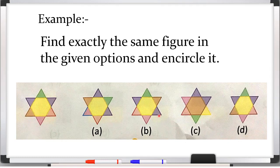You can see that all figures are the same but there is a difference in colors. In the original figure you can see green color is on the right-hand side and purple color is on the left-hand side. So let's find out where the same colors appear — and it is exactly the same in figure D. So we will encircle it.